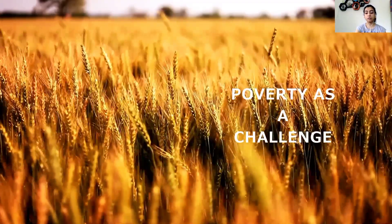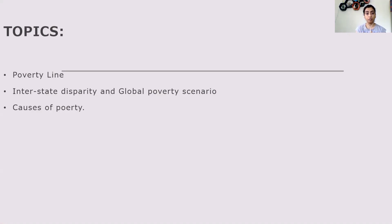So in today's class, we will be looking into topics like: what is poverty line? You might have been hearing the word poverty line. How do we estimate poverty line? How every country has a minimum standard for deciding what the poverty line should be. Then we will be talking about interstate disparity and the global poverty scenario — how poverty is not the same in all states of the country. And lastly, we will be looking into the causes of poverty.